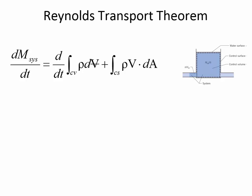Let's review what we looked at last time. We had a tank, and when we looked at this tank, we were discussing the system. The system, as you recall, was the dark blue fluid. What made the system different from other fluid particles? It's maybe that what's before and after is also water — we're just interested in a certain amount of water, and that's what we call the system. It's continuously connected.